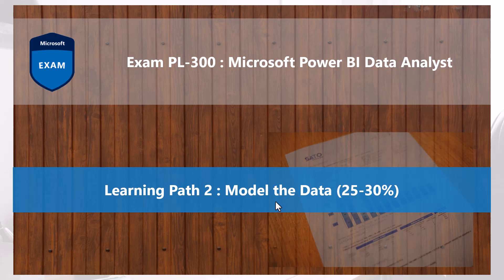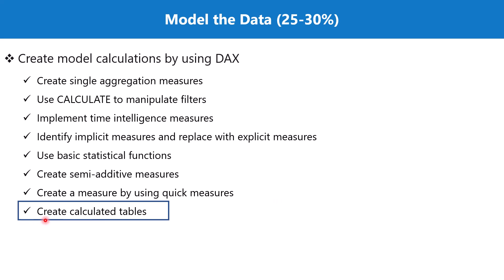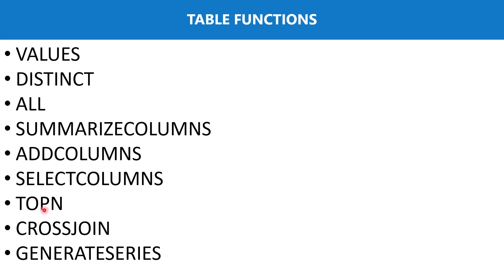Bismillah Rahman Raheem. Hello everyone, welcome back to the PL300 exam preparation series where we are looking at the second learning path: model the data. In this video we are going to keep exploring the topic of creating calculated tables. We are going to discuss two very important DAX table functions: TOPN and CROSSJOIN. We have already talked about CROSSJOIN as part of the joins functionality, and we are going to explore how the CROSSJOIN DAX function enables the cross join operation inside the Power BI environment and how it is used to create a table.